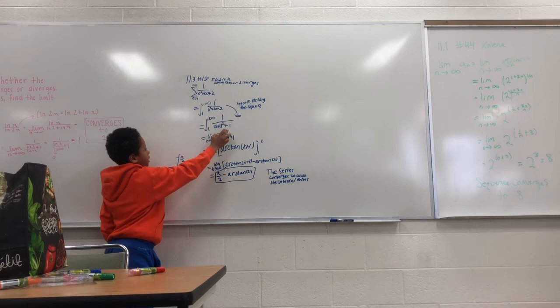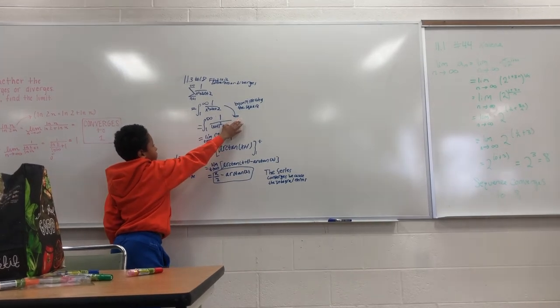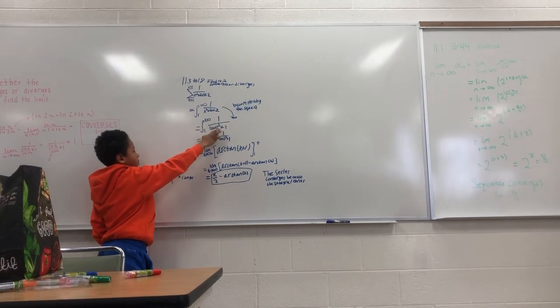So then we can use the method of completing the square, so we get 1 over x plus 1 squared plus 1.